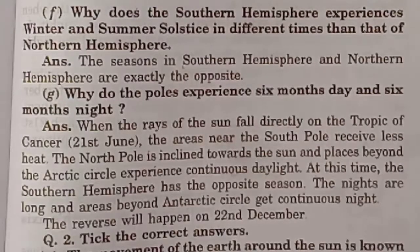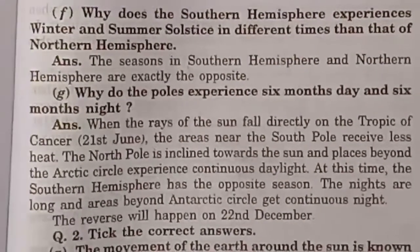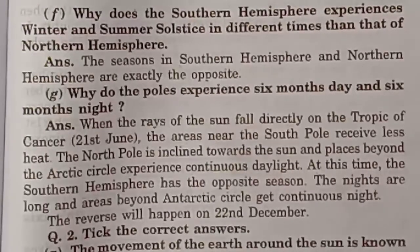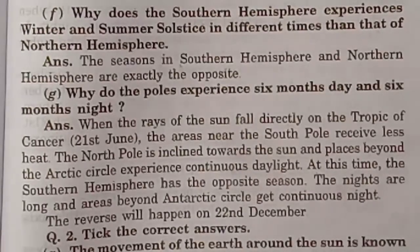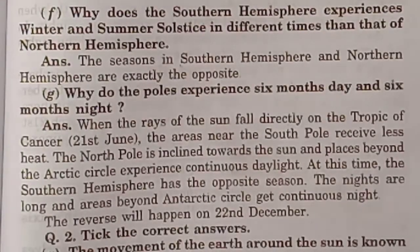Why does the southern hemisphere experience winter and summer solstice at different times than the northern hemisphere? The seasons in the southern hemisphere and northern hemisphere are exactly opposite.